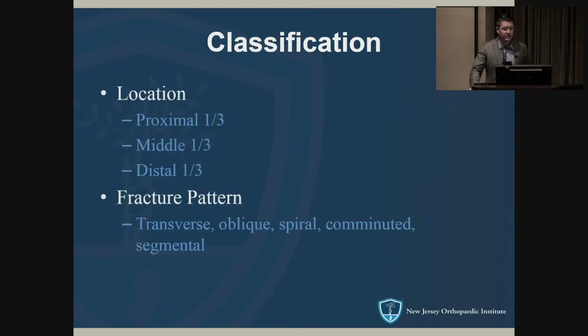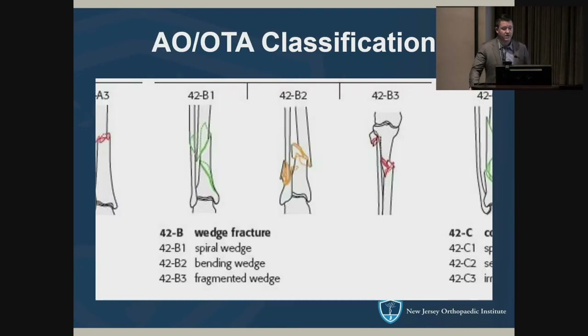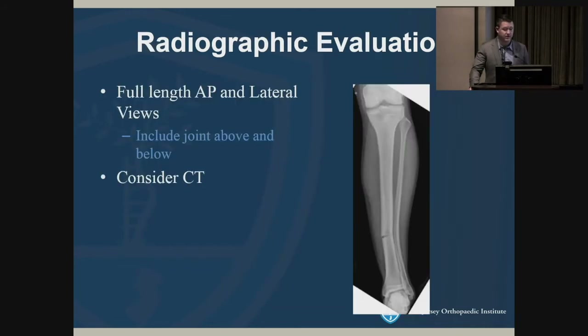There are descriptive classifications as well as the AO. Similar to other AO classifications, you have A, which is simple, B, and C, which is comminuted.